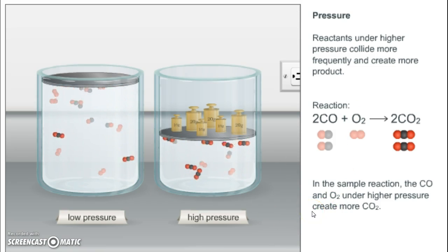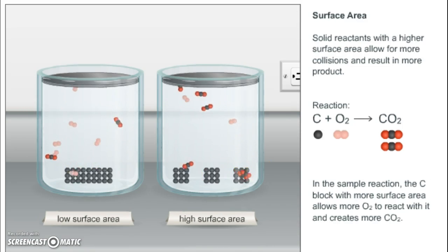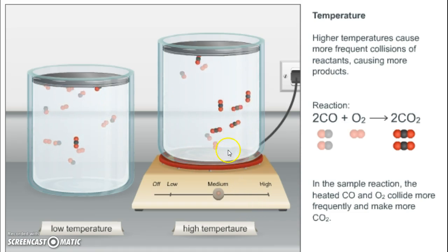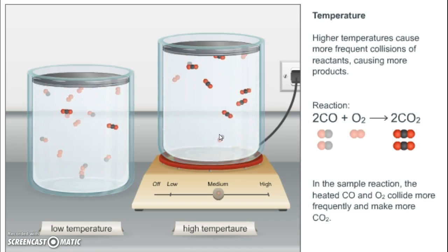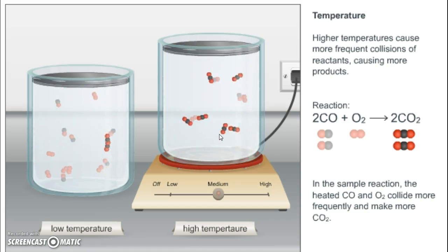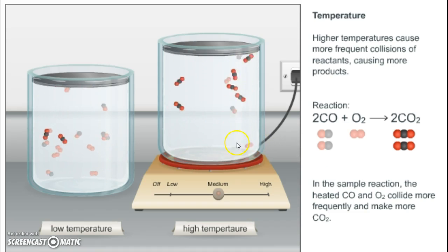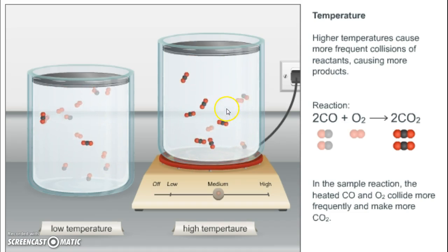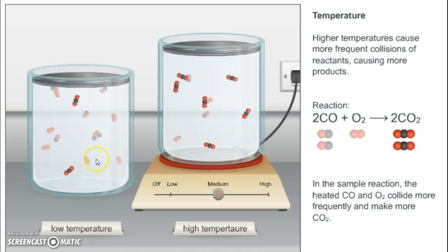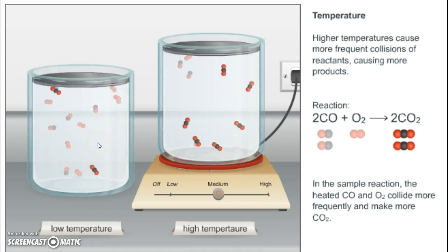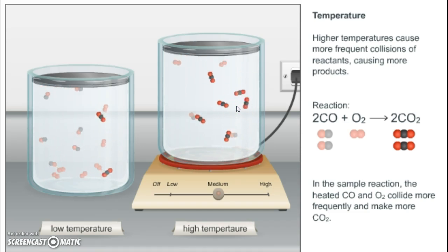In the sample reaction, carbon monoxide and O2 under high pressure create more carbon dioxide. Now let's look at temperature. This one's easy to see: the higher the temperature, the faster they're moving, and the faster they move, the more frequent the collisions of the reactants, and the more they react. At high temperature you can see six CO2 molecules formed, while at low temperature only two CO2 molecules formed — with a lot more carbon monoxide and oxygen still floating around because they're going slower and having fewer collisions. Higher temperature means molecules move faster, which means more collisions.